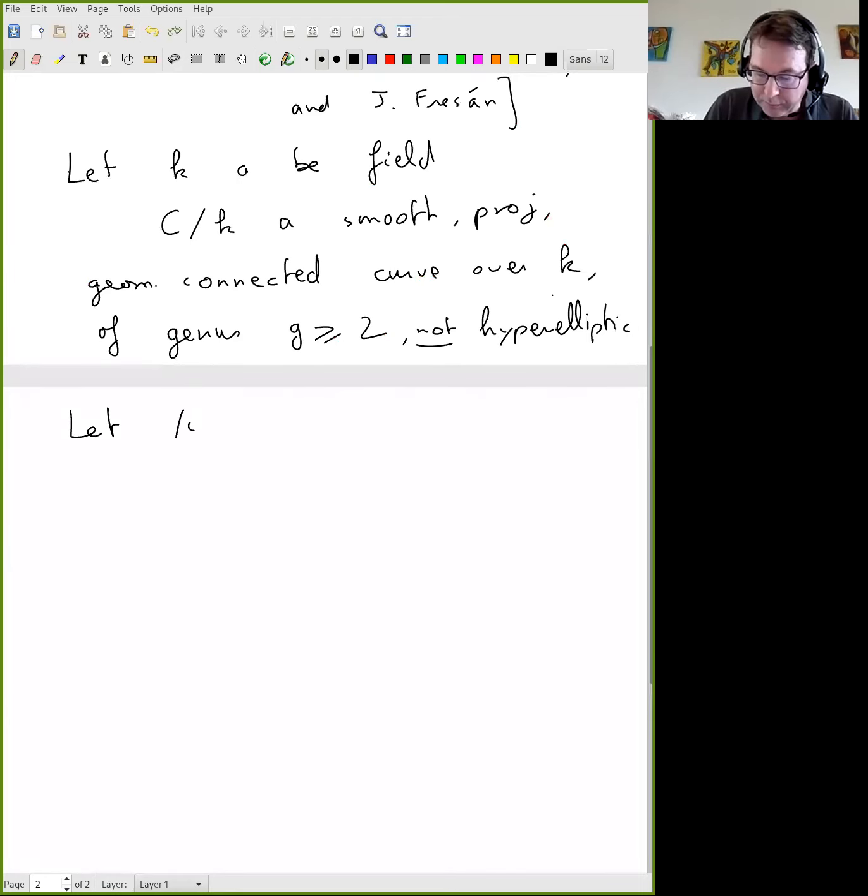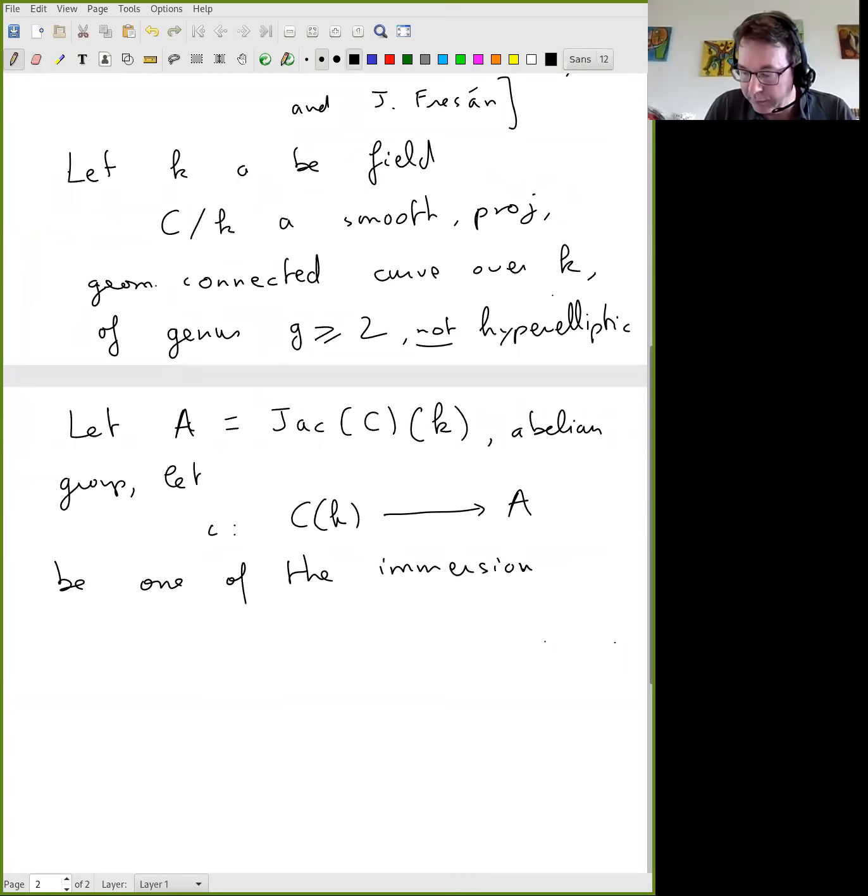So we take a field. C over K is a smooth, so a nice algebraic curve, smooth, projective, geometrically connected curve over K of genus at least two and not hyperelliptic. So I will try to explain all of these words after the statement. Then there is something called the Jacobian of C, and I take the points defined over K. It's an abelian group. Then there is a way to inject C, the K rational points, into A. So one of the immersions. Again, I will explain how it goes. Then the image of C of K inside A is a Sidon set.